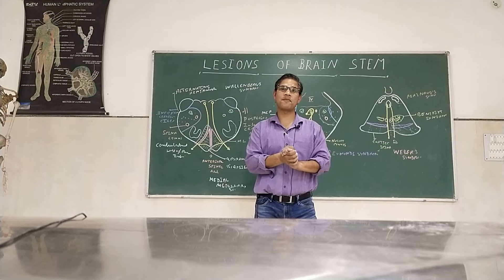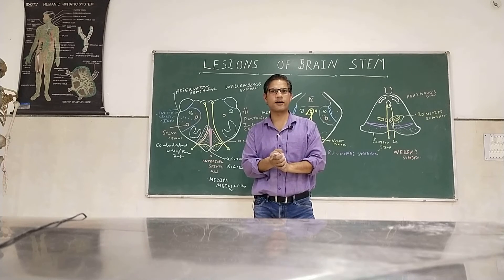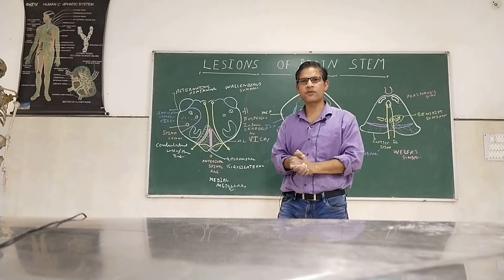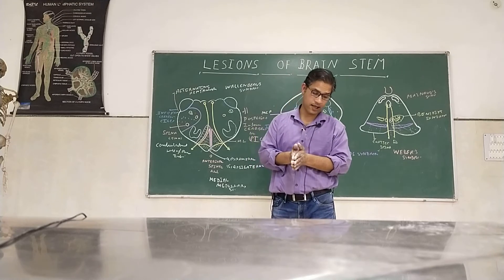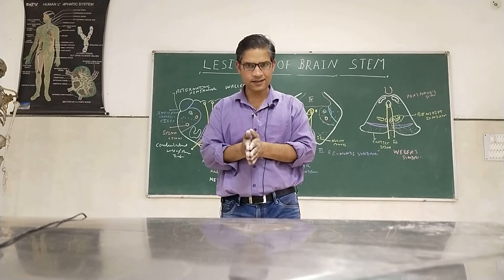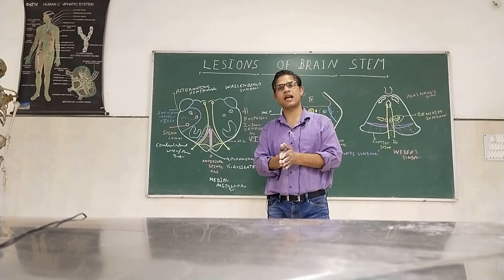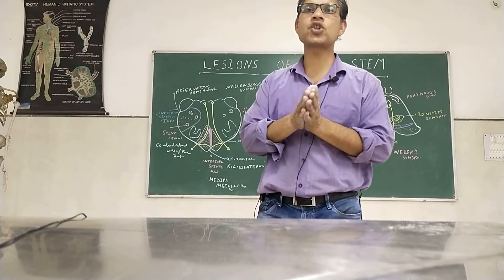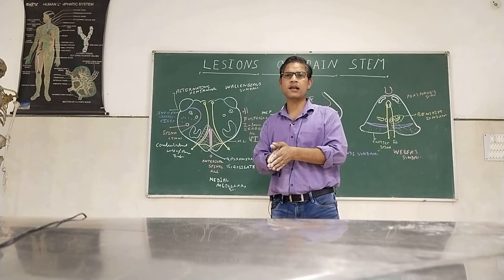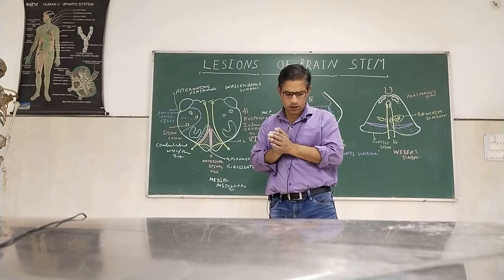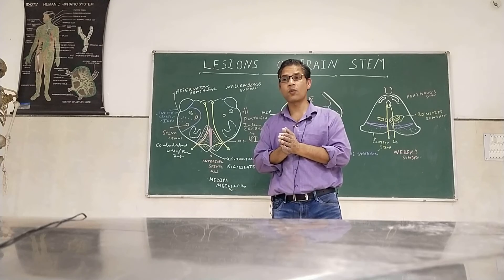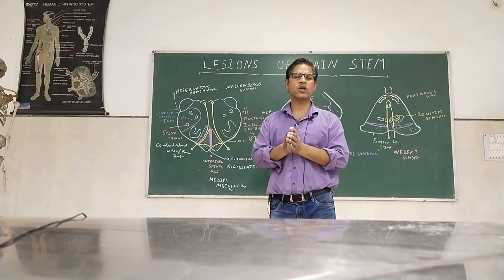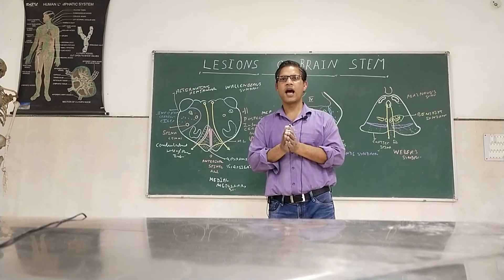If all cranial nerves from 3rd to 12th are affected — noting that the 1st and 2nd nerves are extensions of the cerebrum — then brain stem death is declared, and we can announce that the person is deceased. These syndromes are frequently asked as short notes in examinations. They are also clinically relevant when examining a neurology patient: you can assess the level of the brain stem lesion without MRI or CT scan. They have clear anatomical bases.